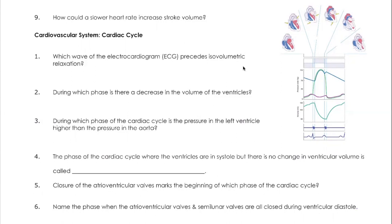The first question asks which wave of the electrocardiogram precedes — meaning happens beforehand — isovolumetric relaxation. Looking at the ECG, we have the P wave, the QRS complex, and the T wave. The P wave is for atrial contraction. The QRS complex is for atrial relaxation as well as ventricular contraction, and the T wave is for ventricular relaxation.